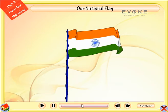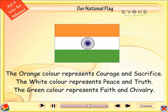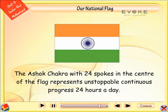Question time: Do you know what the three colors in our national flag depict? The orange color represents courage and sacrifice. The white color represents peace and truth. The green color represents faith and chivalry. The Ashok Chakra with 24 spokes in the center of the flag represents unstoppable, continuous progress 24 hours a day.